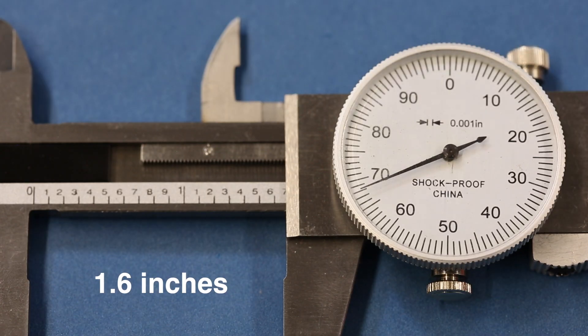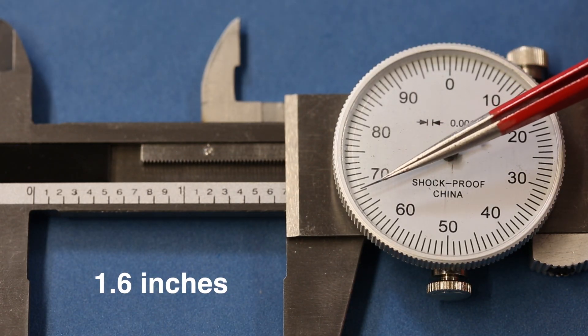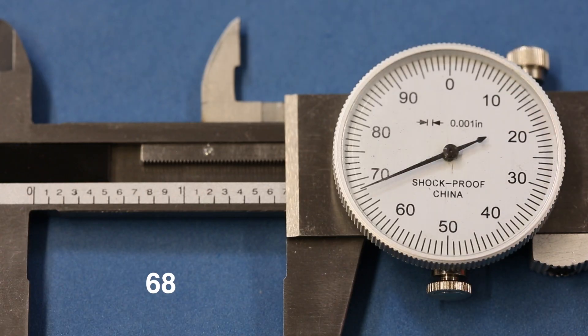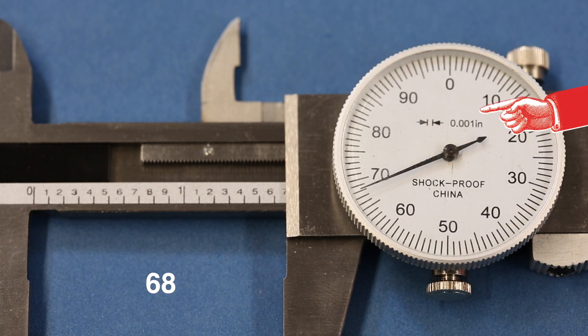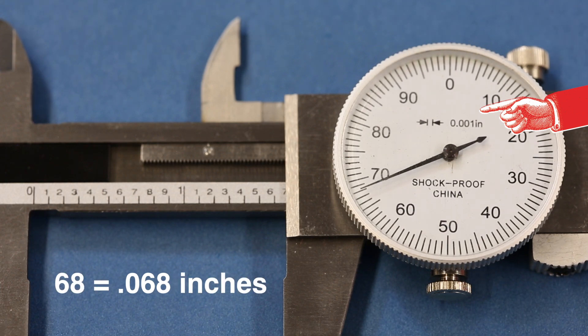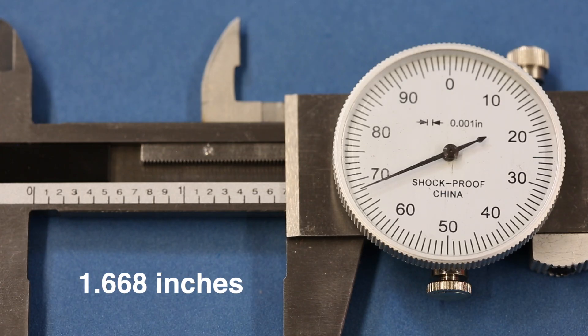Then read the dial, which is 68 in this example. Since the dial says it's an increment of 1/1000th of an inch, we know it's 0.068 inches. Add the coarse and fine measurements together, and you get 1.668 inches.